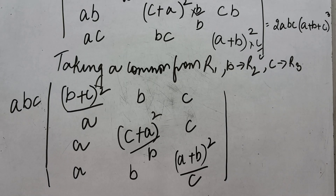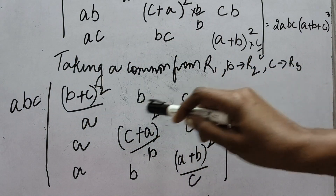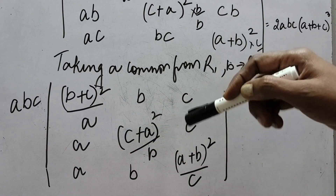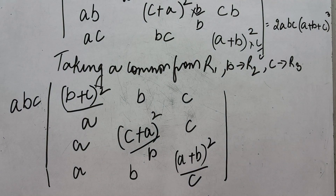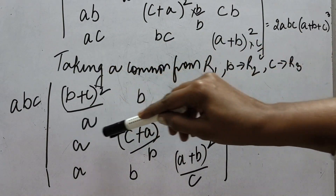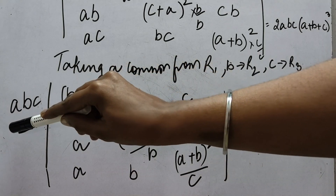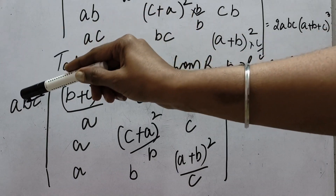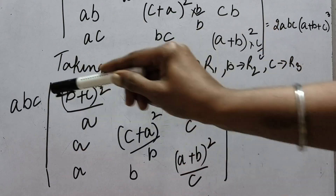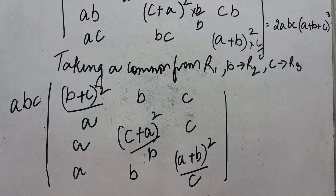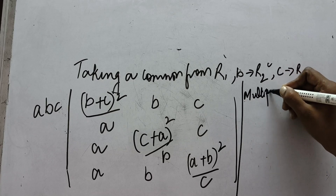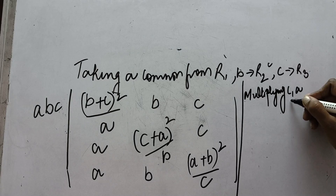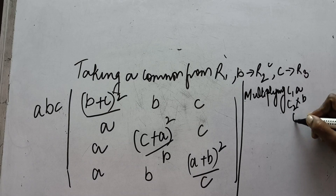Now according to the requirement of the right hand side, I am introducing more elementary operations. In the previous step we took a common from row 1, b from row 2, c from row 3. Next, I am going to multiply a with column 1, b with column 2, and c with column 3, because I want to eliminate the denominators. So the outside factor is abc and I now multiply each column accordingly.